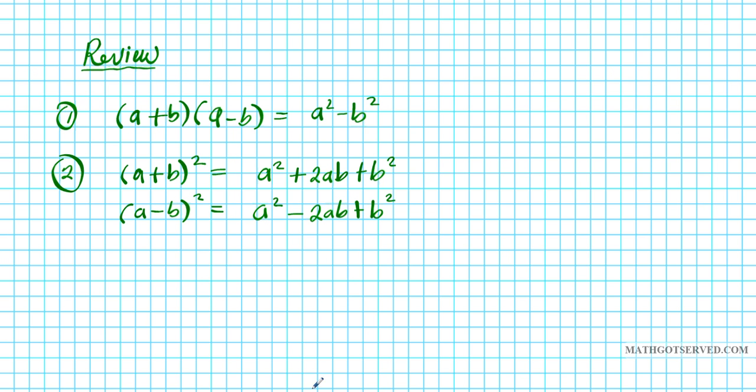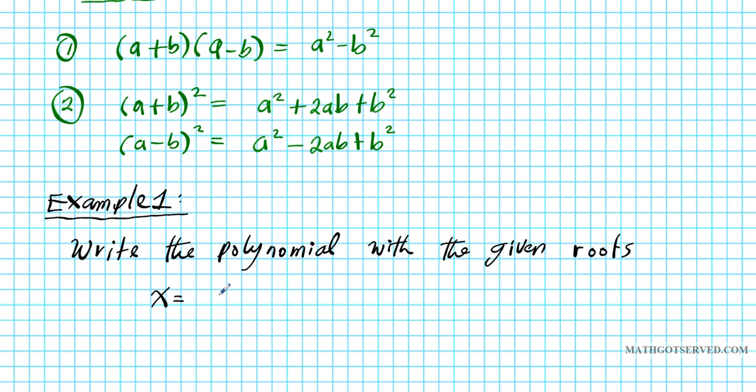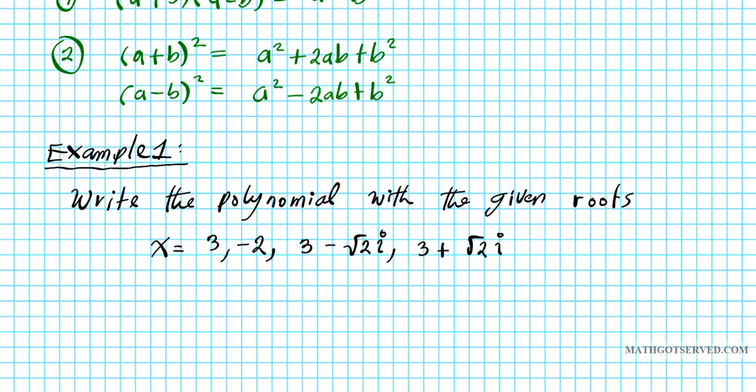Let's take a look at the example that we're going to be doing. Example one: we are to write the polynomial with the given roots. So let's say the roots that are given are X = 3, -2, 3 - √2i, and 3 + √2i. So we see that there are four roots here, so we want to write the polynomial of degree four that has these four roots.